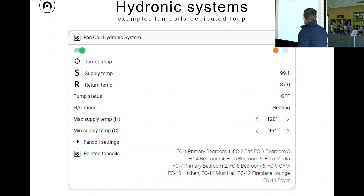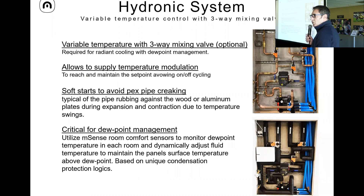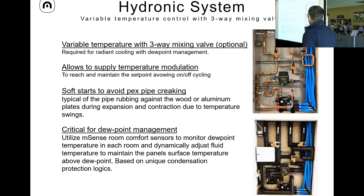One of the most common hydronic systems is the variable temperature hydronic system, achieved using a three-way valve. This will be done with the cassette that Darren was showing you — the Calepi already has the three-way valve integrated. This allows supply temperature modulation and has many advantages.